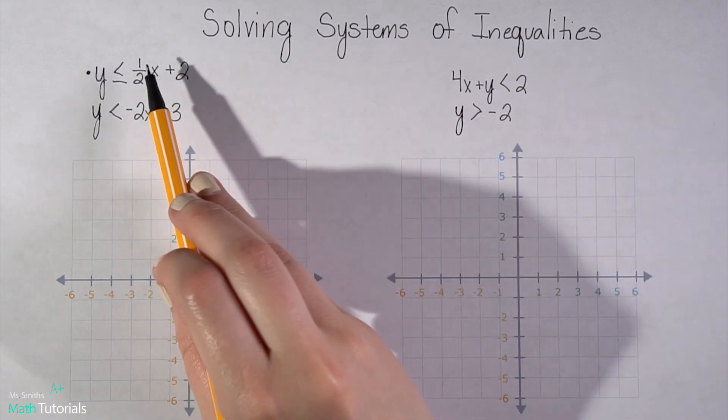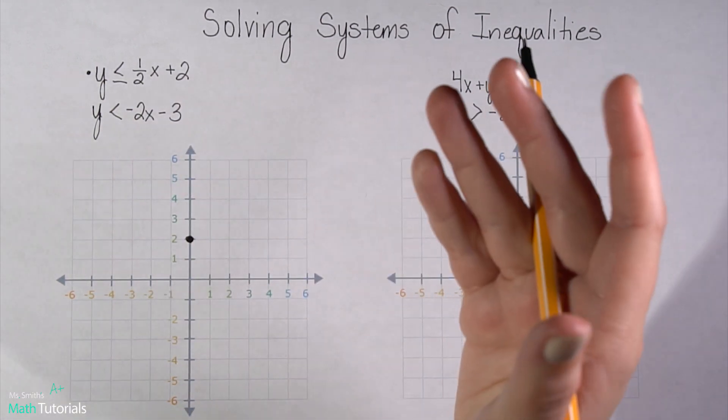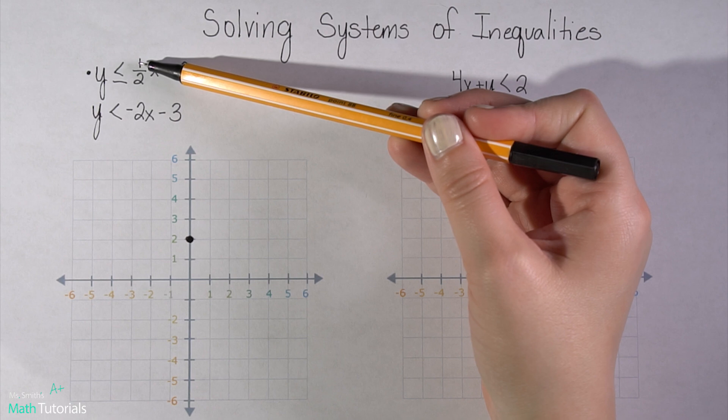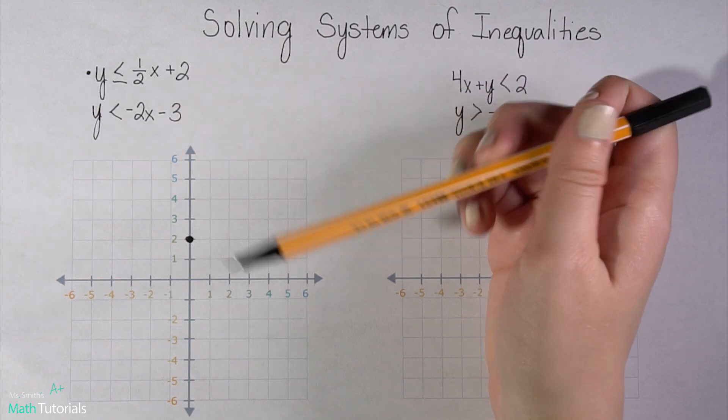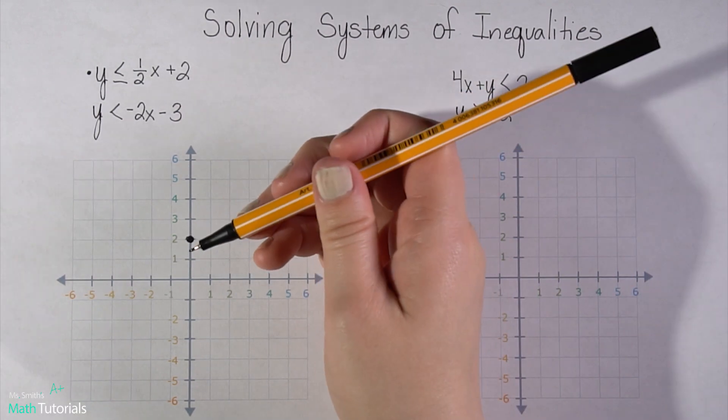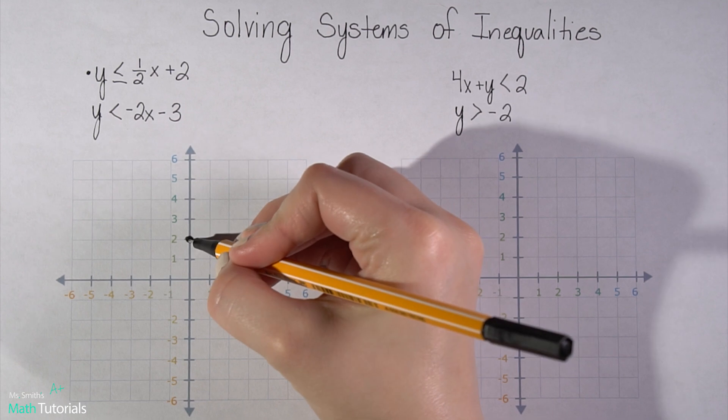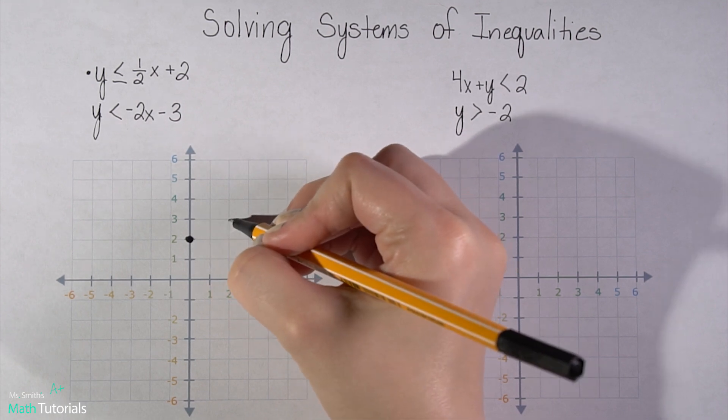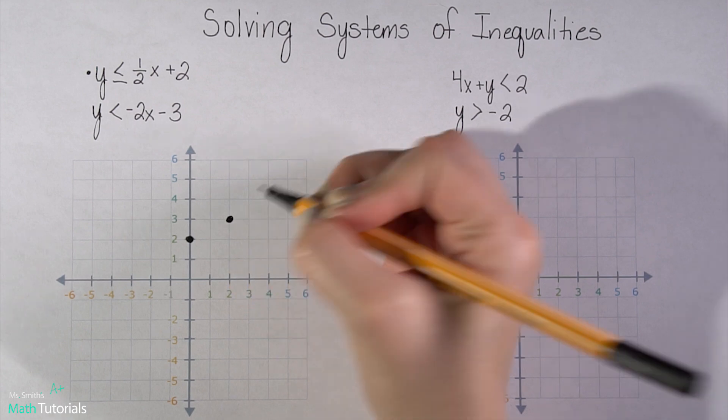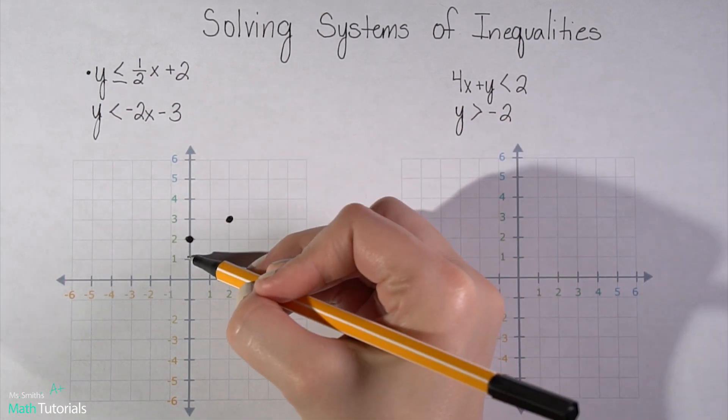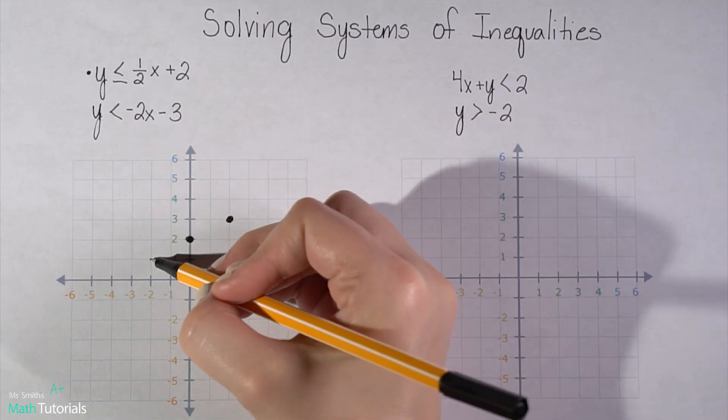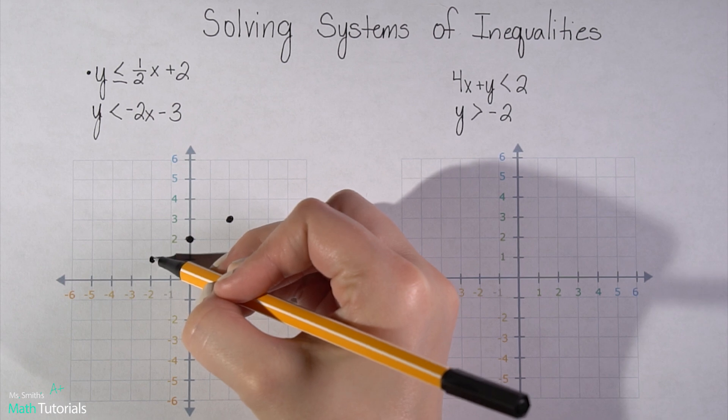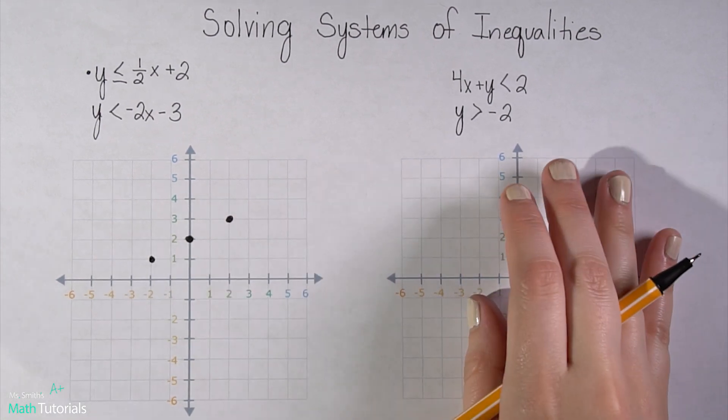From there, I'm going to move based on what my slope tells me. So my slope is positive one half. So that means that I'm going to be moving up one, right two. And I could also do the reverse, down one, left two. And notice it falls all on the same line.